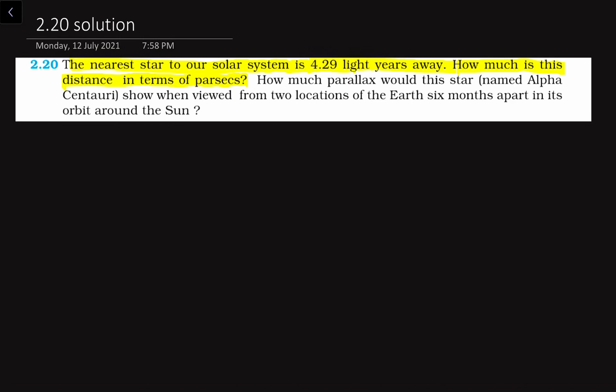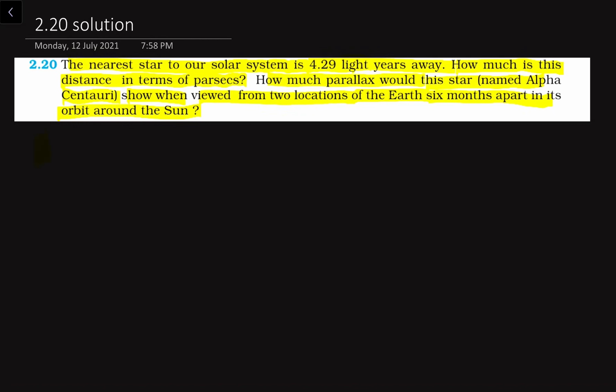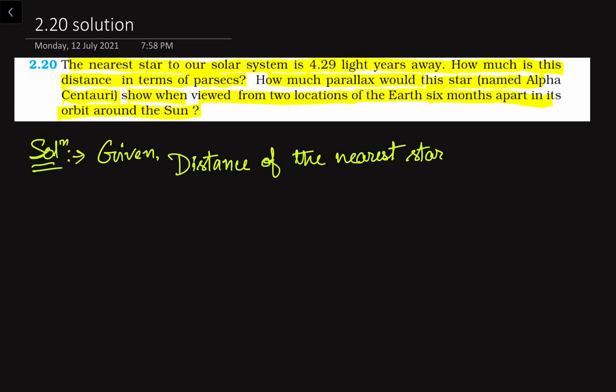In the last question we have already seen what is a parsec and what is the value of one parsec. So we have to convert the meter unit into parsec unit. How much parallax would this star, named Alpha Centauri, show when viewed from two locations of the Earth six months apart in its orbit around the Sun? In the last question we also considered the baseline where the Earth is at two opposite points in its orbit. From that we will find out the parallax angle. So first let us find the perfect expression of this distance.